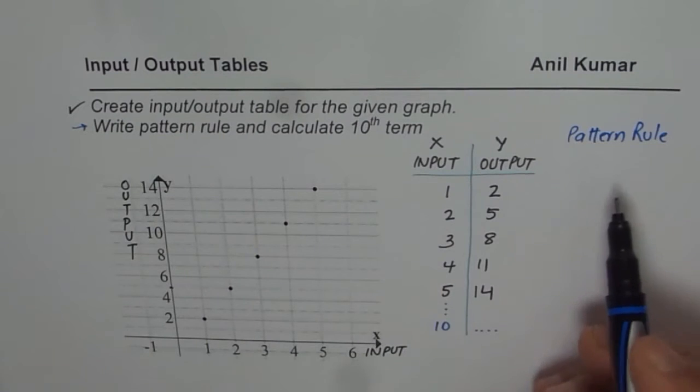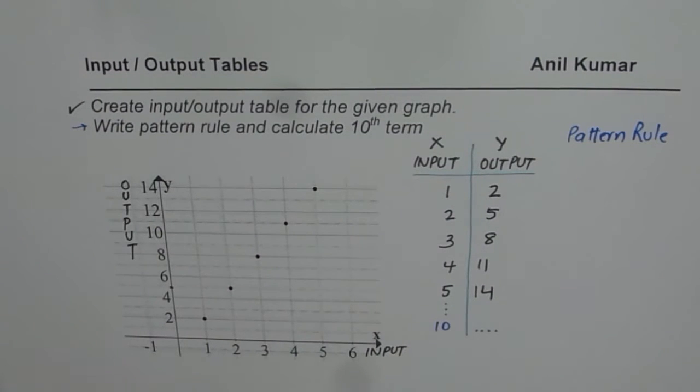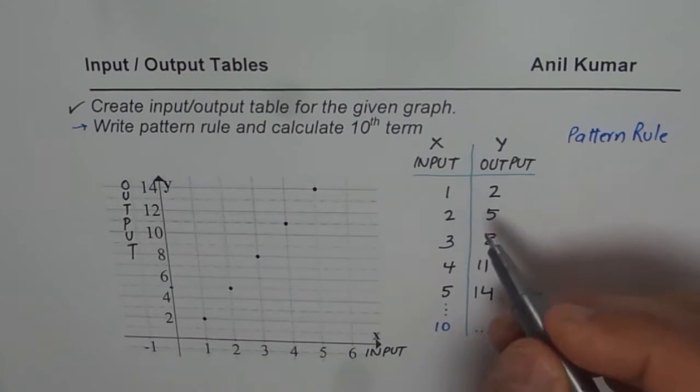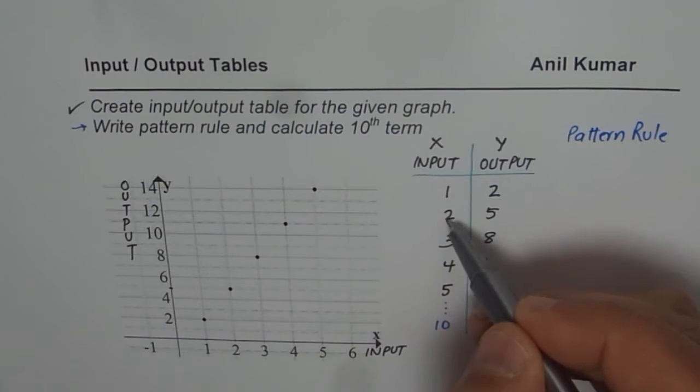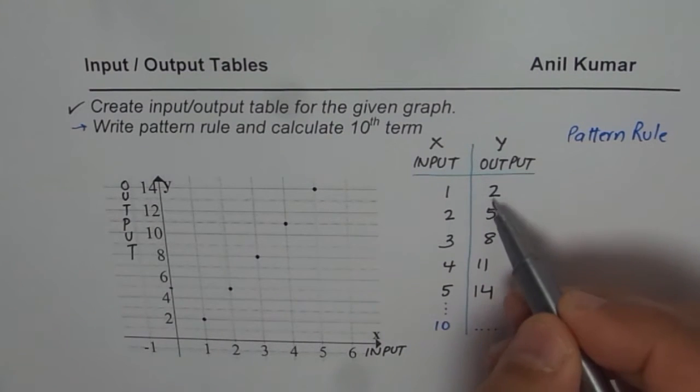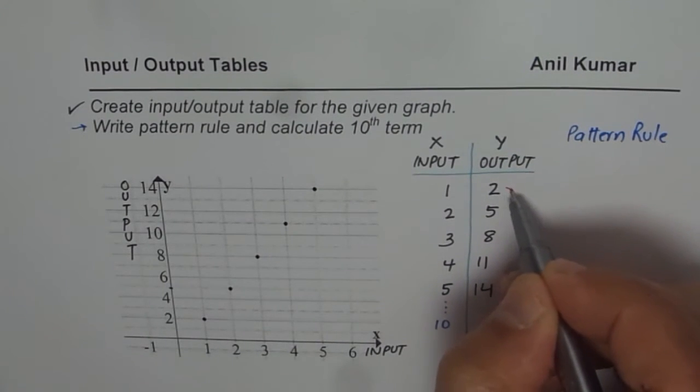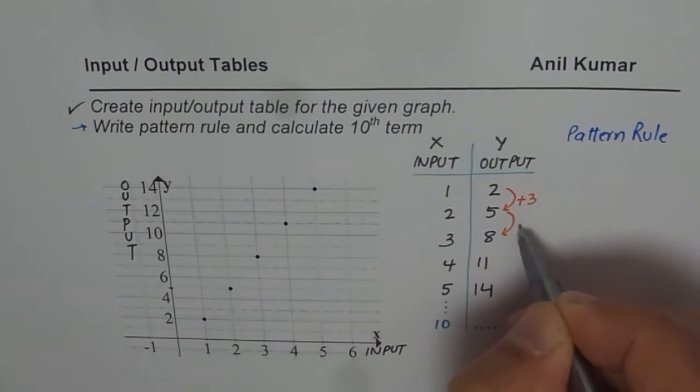To find the pattern rule, let's see the pattern itself. So if you analyze what happens, as you input numbers increase by 1, what happens to Y values, the output? 2 to 5, 5 to 8, 8 to 11, what we observe here is that they increase by 3 each time. So they increase by 3 each time.